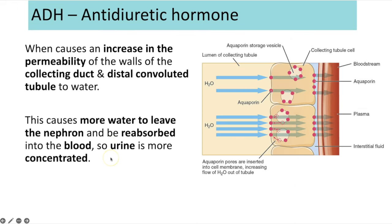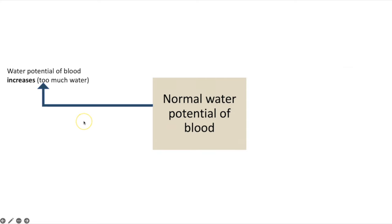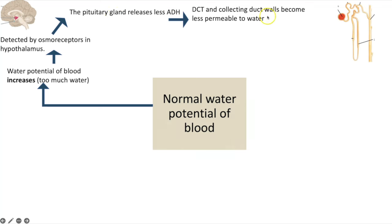The more ADH released, the more aquaporins are embedded in the membrane, and the more water is reabsorbed back into the blood, resulting in lower volumes of more concentrated urine. The vesicles containing aquaporins fuse with the cell surface membrane so that more water can travel through back into the blood. If the water potential of the blood increases — meaning you've had a lot to drink — osmoreceptors in the hypothalamus detect this and cause the hypothalamus to produce less ADH, so the pituitary gland releases less ADH.